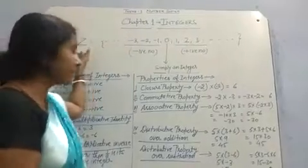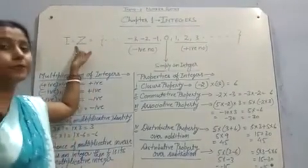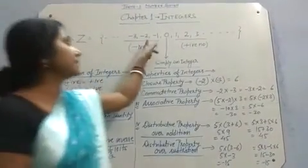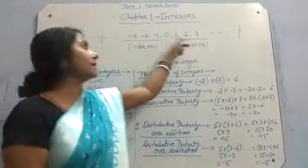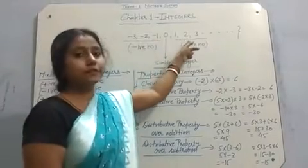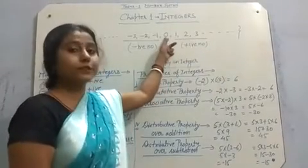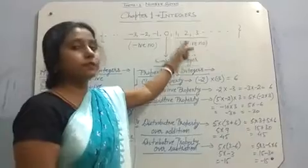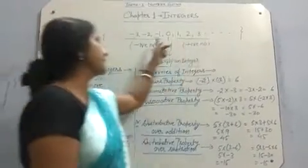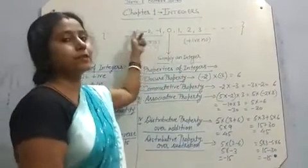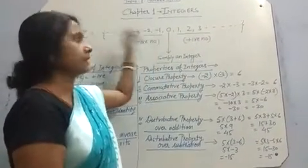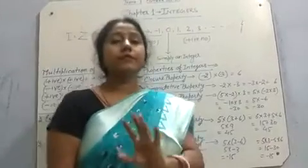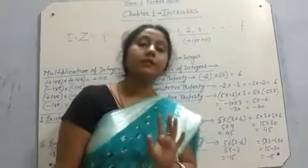Integers we denote as I, and as a set it includes all the negative natural numbers and positive natural numbers. Natural numbers include 0. Positive natural numbers: 1, 2, 3, 4 and so on. Negative natural numbers: minus 1, minus 2, minus 3 and so on. 0 is simply an integer — neither positive nor negative.